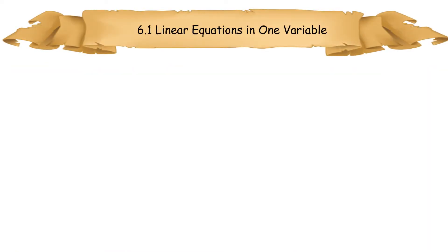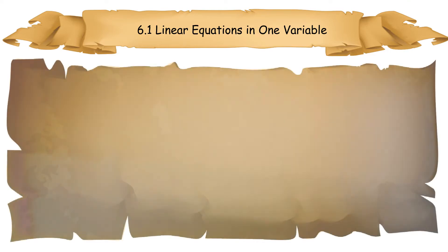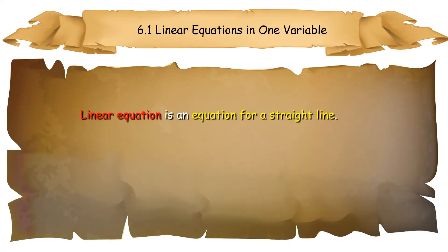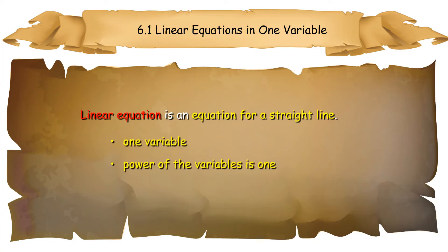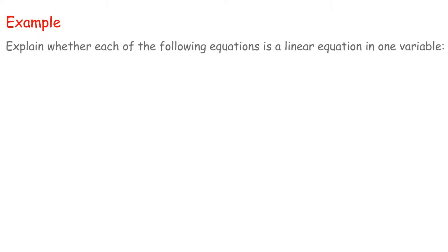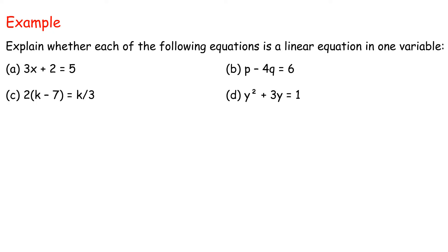6.1 Linear equations in one variable. A linear equation is an equation for a straight line. Linear equations in one variable are equations with one variable, and the power of the variable is 1. Example: explain whether each of the following equations is a linear equation in one variable.